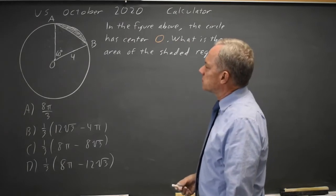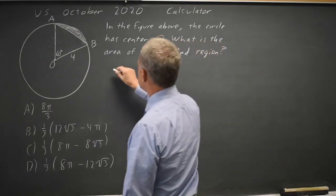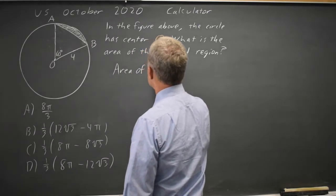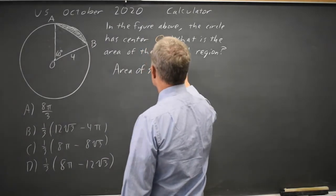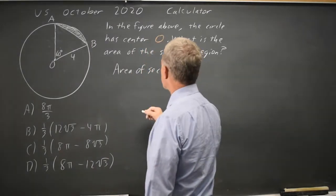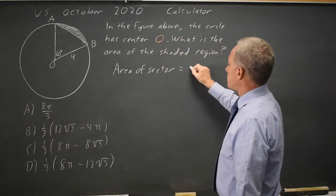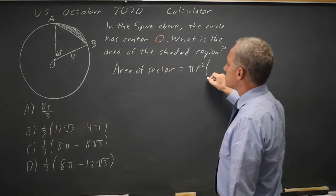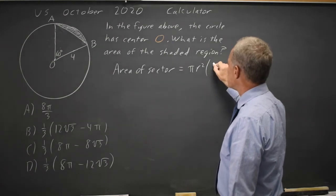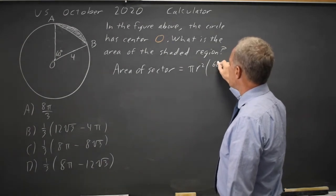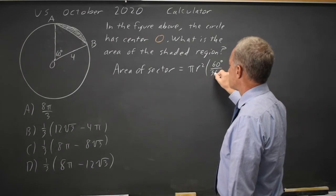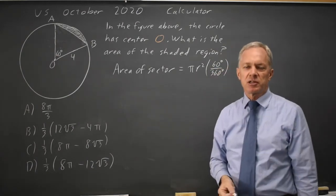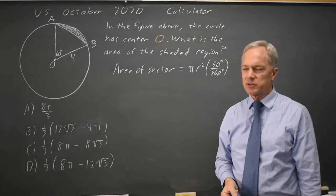To do that, I'll find the area of the sector. The area of a sector is the area of the circle, π r², times the fraction of the circle. In general, that would be π r² times x degrees over 360 degrees.